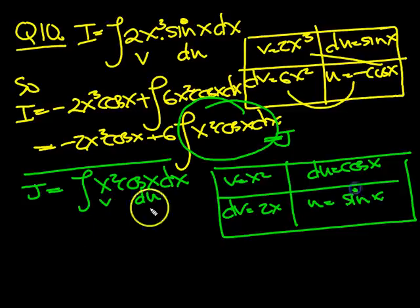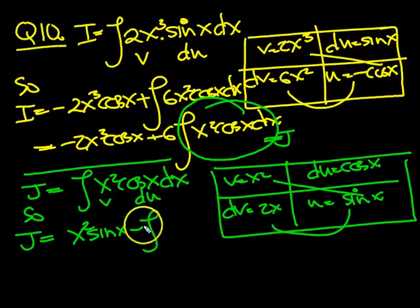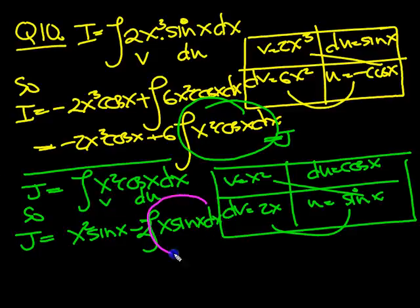So we can write down the answer to j now. So j equals uv, those two, x squared sine x, minus the integral of u du v. So it'll be two lots of, I'll put that at the front, x sine x dx. Now I'm going to circle that and call that k.